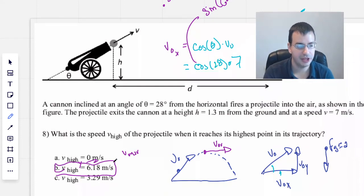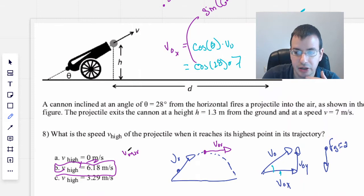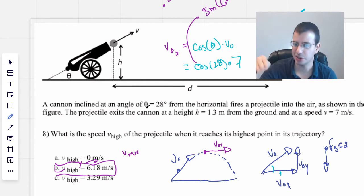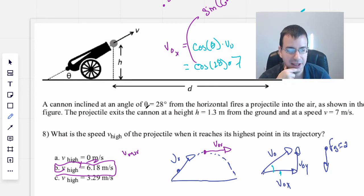And so the velocity at the top will be 6.18, which is still pretty good. It kind of makes sense too, because it's fired mostly horizontal. 28 degrees is more horizontal than it is vertical, and so most of the speed will be in the horizontal direction.